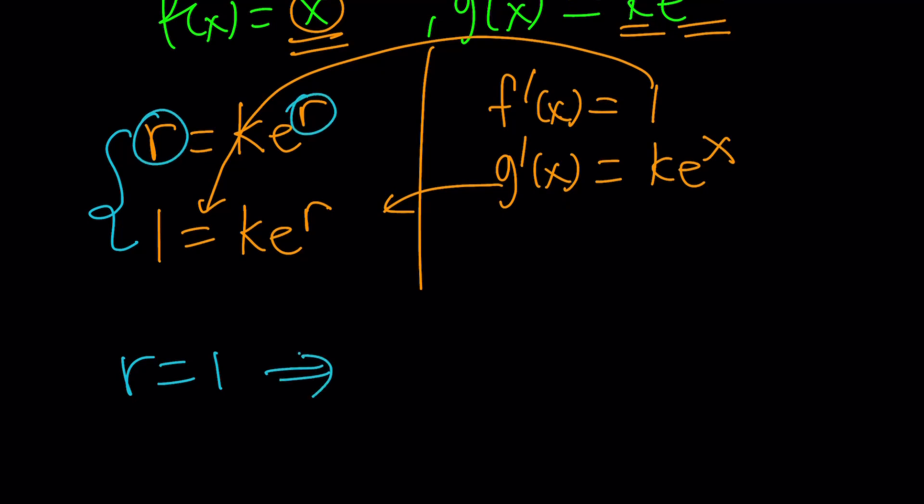But if r is equal to 1, 1 equals k times e to the 1, which means k is equal to 1 over e, because ke is equal to 1. Make sense? So the value that we're looking for is 1 over e.